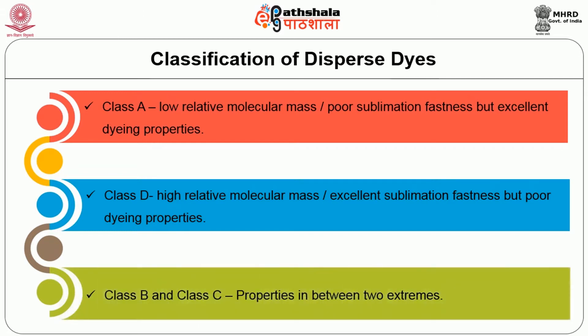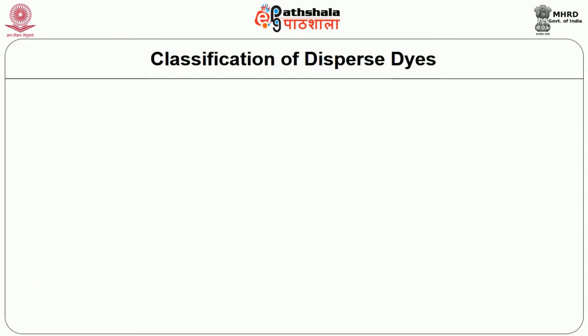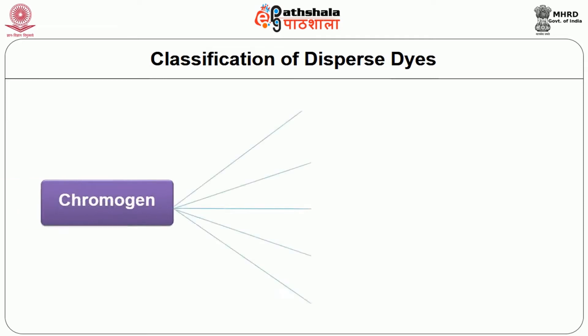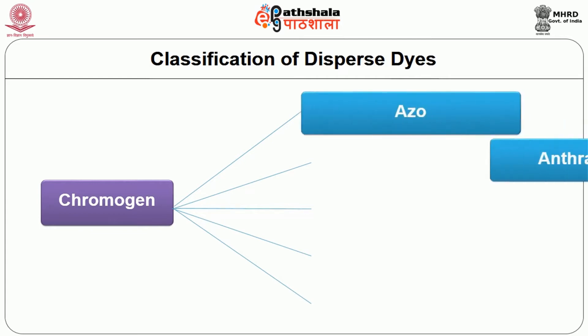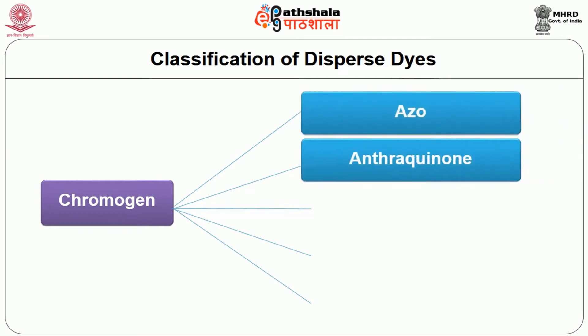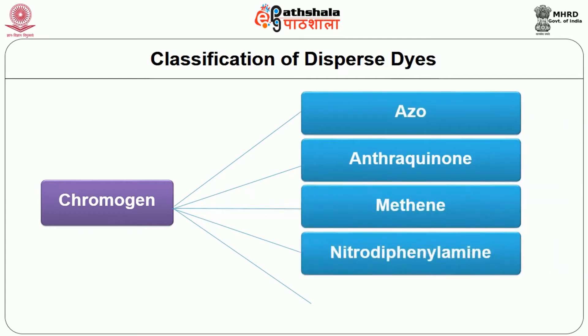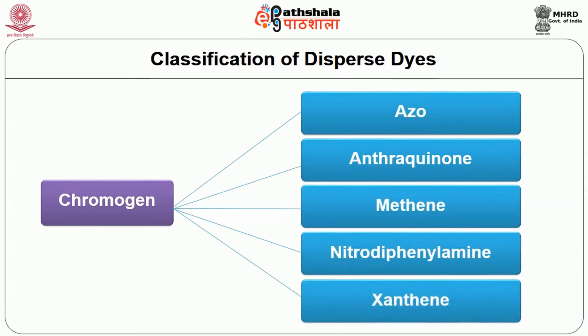Class B and class C dyes are in between these two extremes. Classification of disperse dye is also based on the chromogen. Chromogen is the colouring part of any dye — it may be azo, anthraquinone, metine, nitro-diphenylamine, xanthane and others. This chromogen is responsible for the colour in the dye and the textile material.